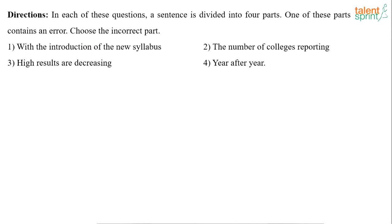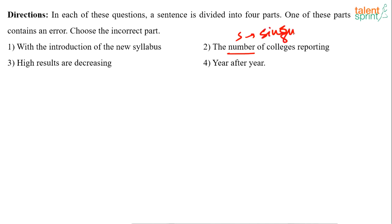With the introduction of a new syllabus, the number of colleges reporting high results are decreasing year after year. The subject here is 'the number,' which is singular. So the supporting verb should also be singular — it should be 'is.' Is decreasing year after year. So the error is in part three: it should be 'is' instead of 'are.'